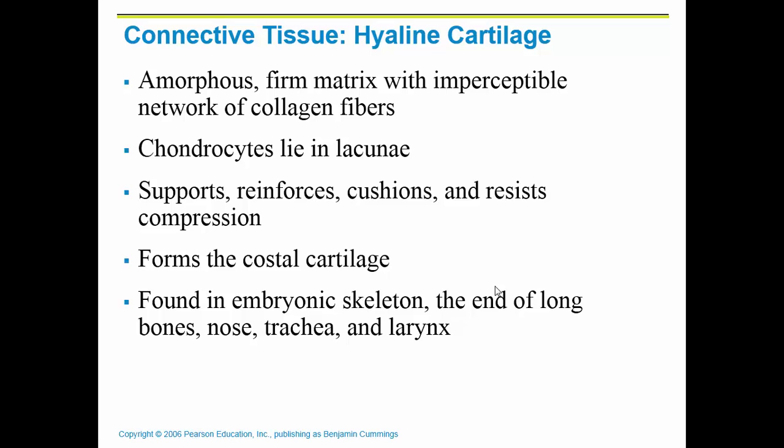Now we move out of connective tissue proper and into cartilage. There are three different types of cartilage in the human body — they're all a little different in what they do and where they are, but they all have very similar characteristics. They are all made up of chondrocytes, which are specifically cartilage cells. Each cartilage cell lies in a lacunae, which is just a space — like the house in which it lives. Cartilage also does not have a good blood supply, so when you tear cartilage, it is very hard to repair.